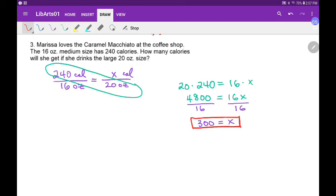Does that make sense? It was supposed to go up. Did it go up? Yes. It went up from 240 to 300. Because I went up from 16 ounces to 20 ounces. Yeah? Okay. That's it. 300 calories. Oh, she can walk it off.